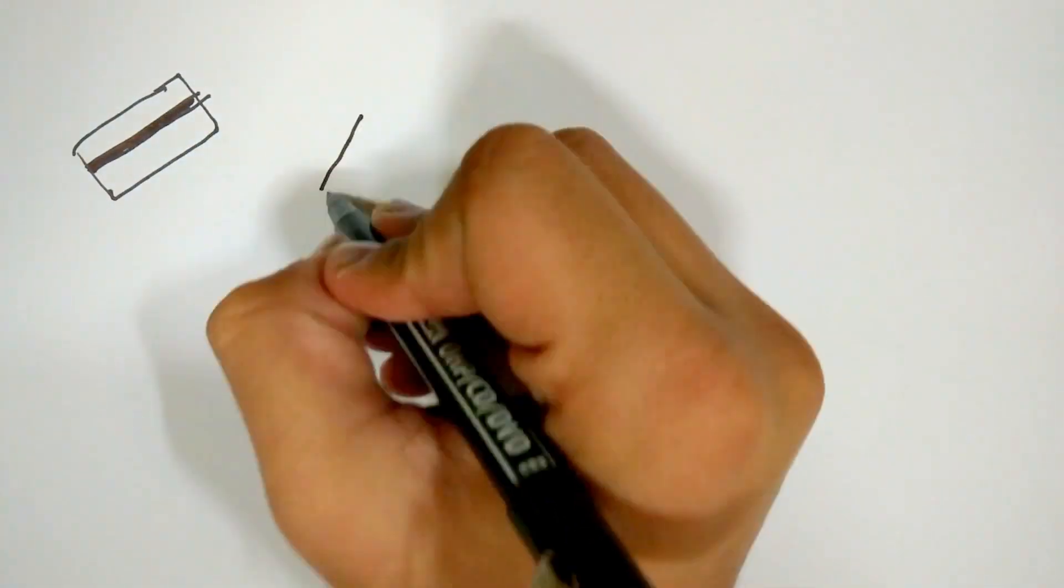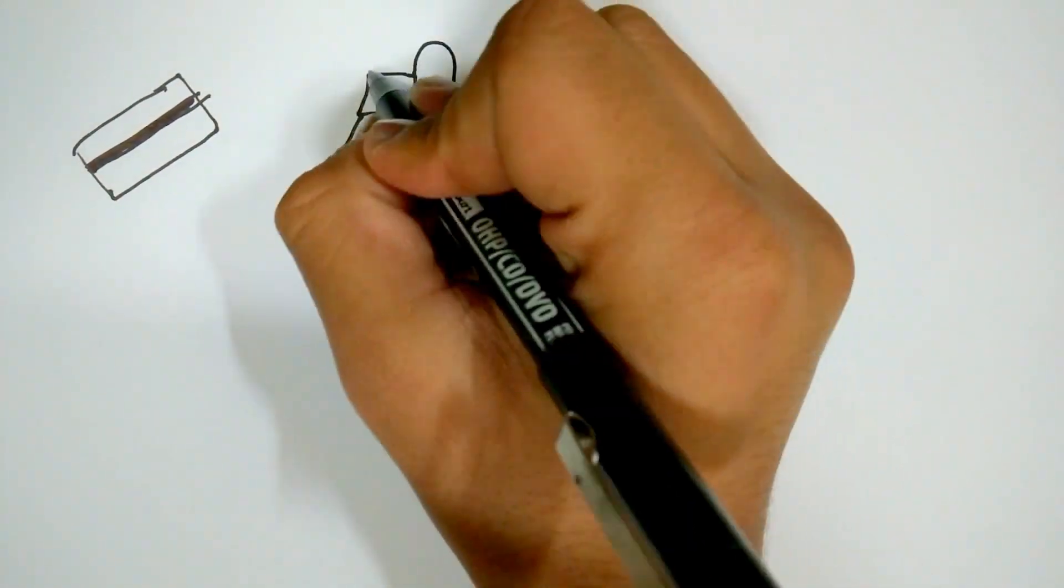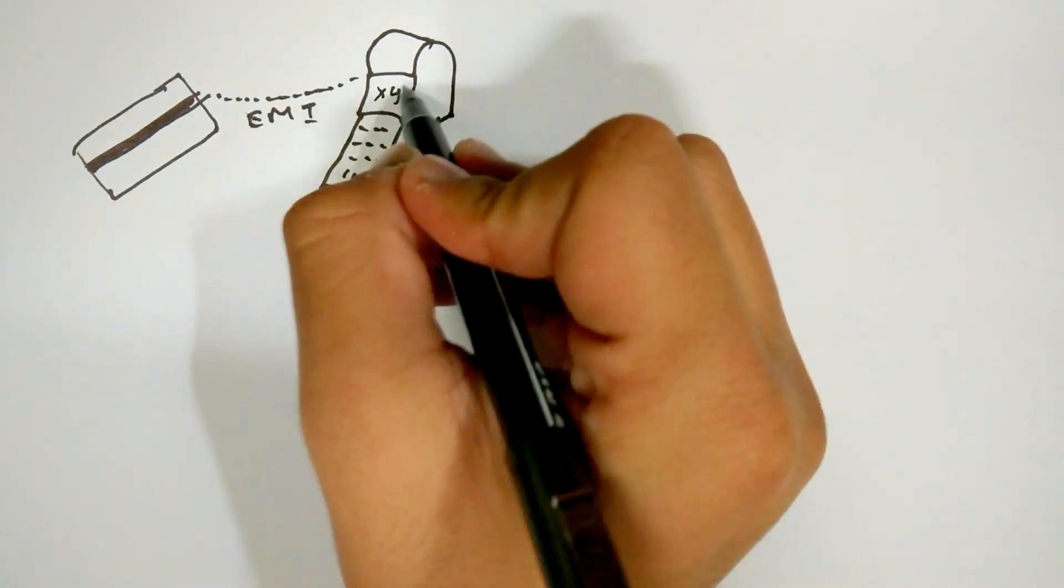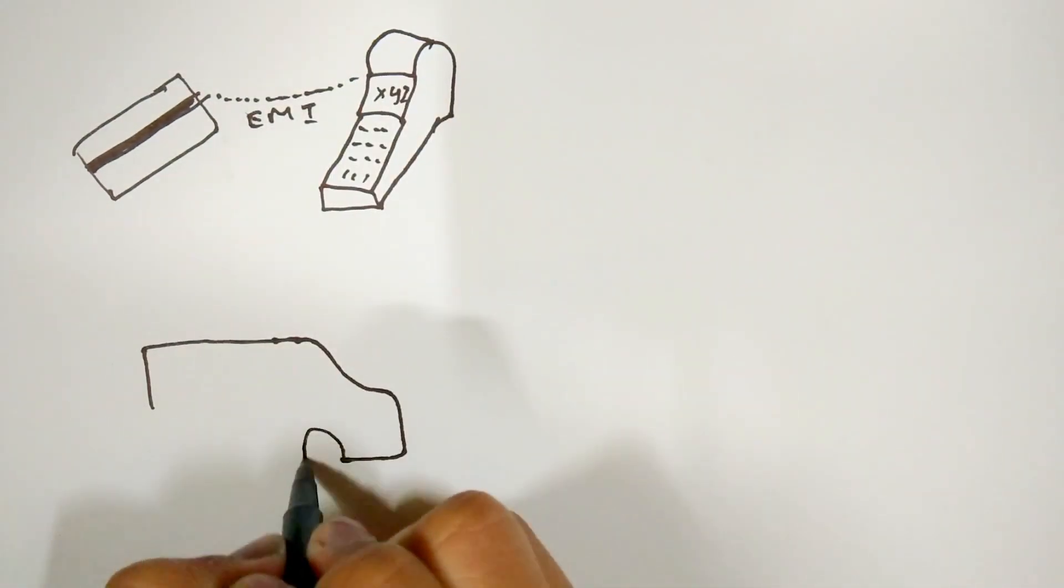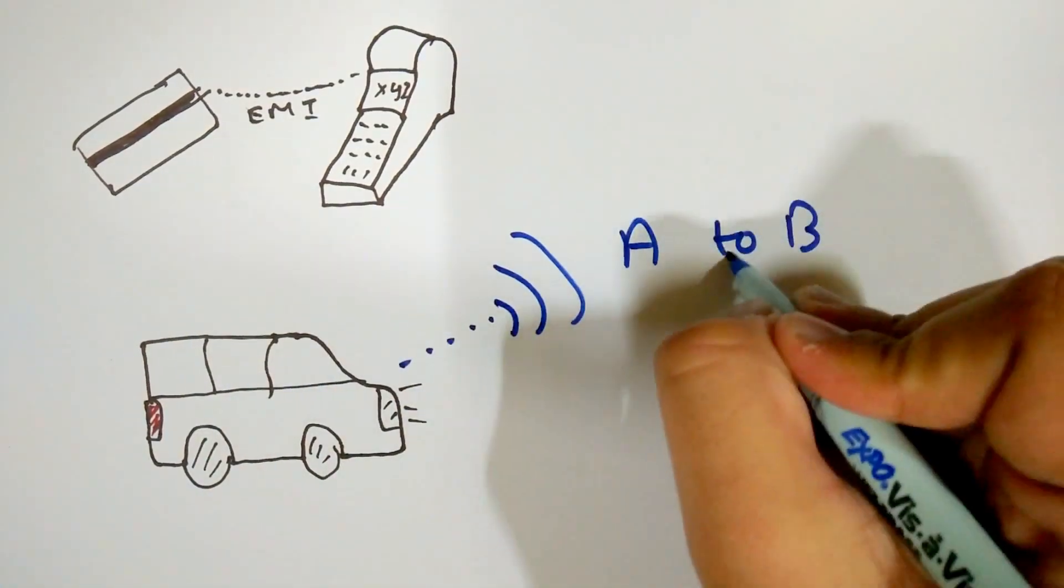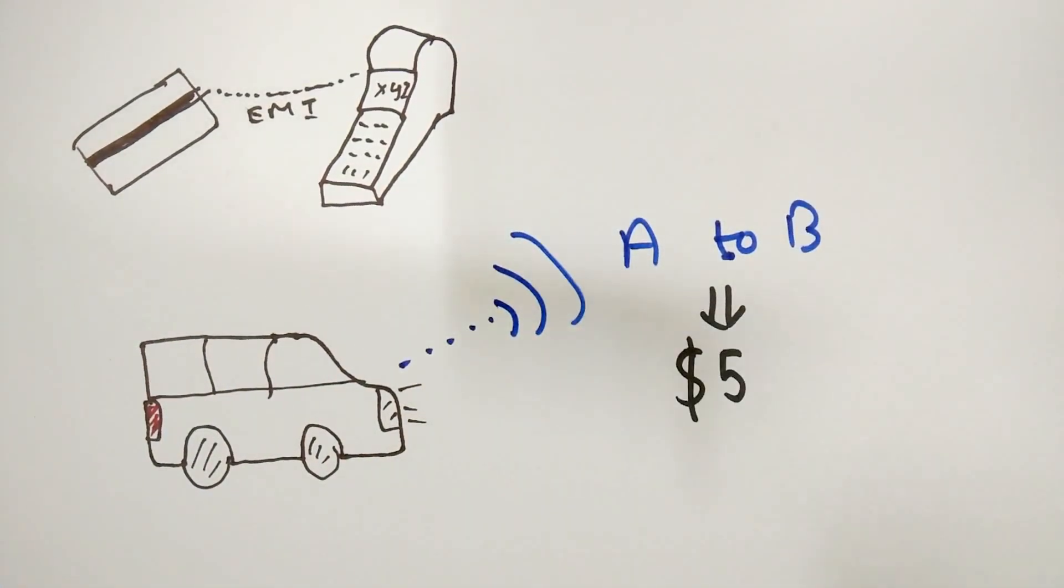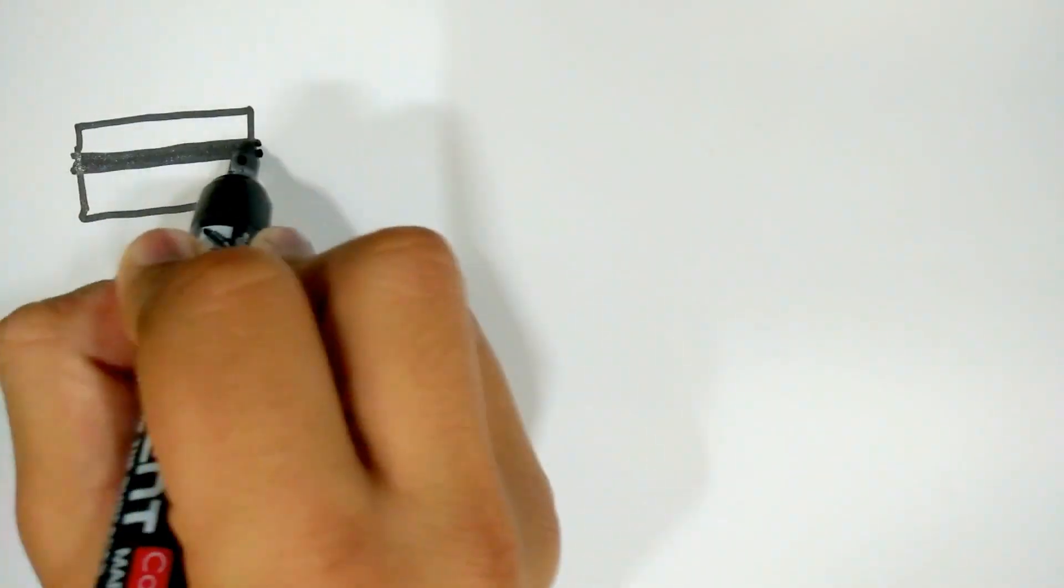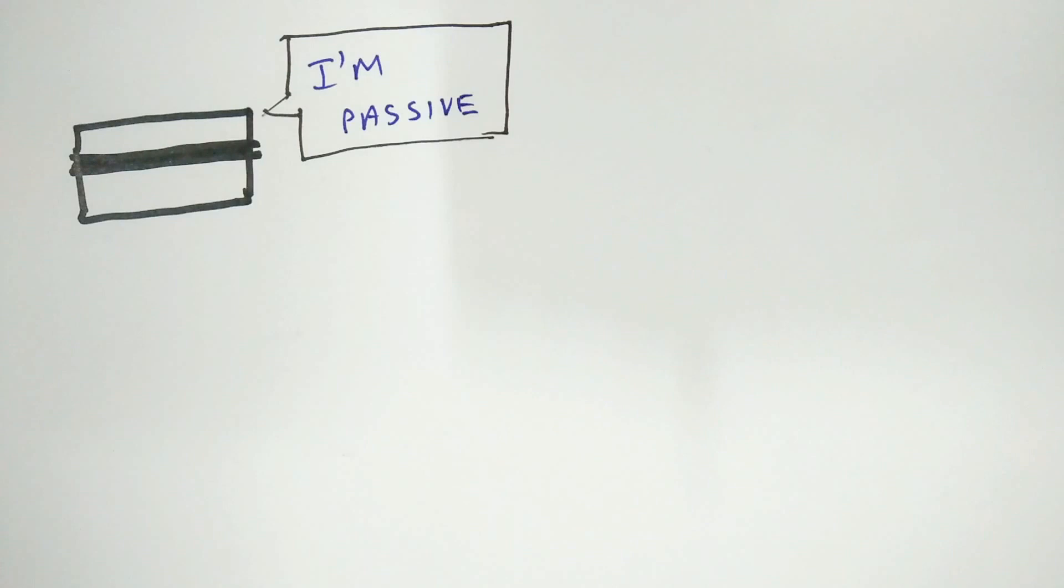NFC can be used for short-range confidential communication like credit card transactions. A more general application would be to detect when you get in and get out of the bus or train and deduct the fare from your credit card directly, eliminating the need for you to buy a physical ticket. NFC can be used to communicate small volumes of data over short distances.